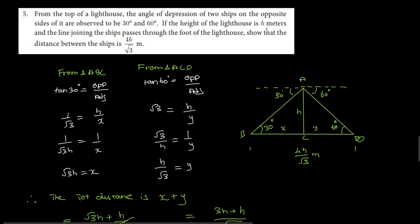So if the height of the lighthouse is h meters, height is equal to h, and the line joining the ships passes through the foot of the lighthouse.